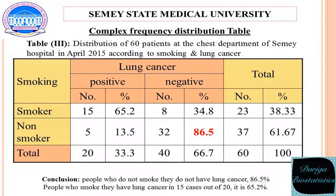It is a 2 by 2 table. The given table presents results of a case-control study. It gives information about distribution of 60 patients at the chest department of CMA Hospital in April 2015, according to smoking and lung cancer. People who don't smoke don't have lung cancer — in this case 32 patients don't have lung cancer and they don't smoke.